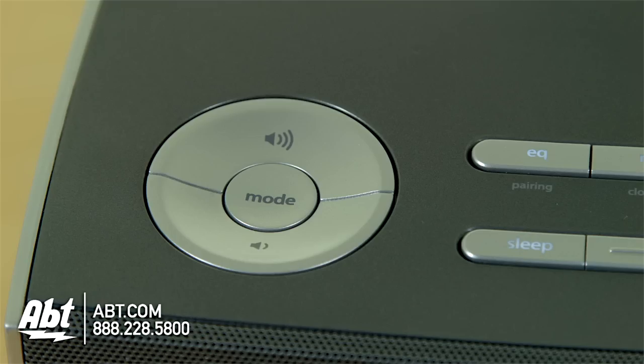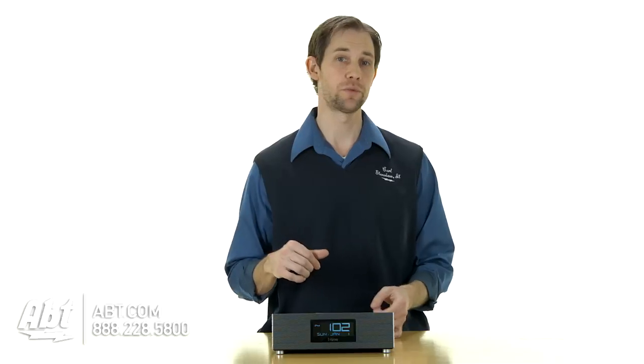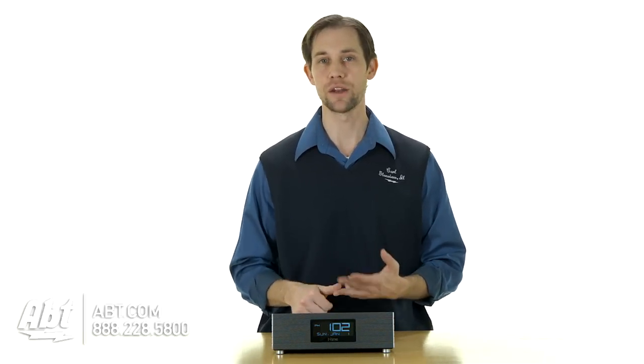So up here on the top is where you're going to control everything. You have a mode button here. This is going to allow you to select between FM radio, Bluetooth, and auxiliary.